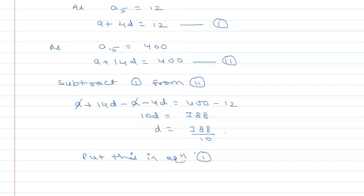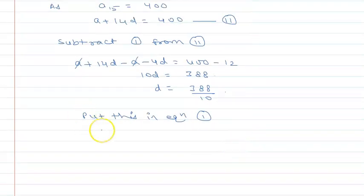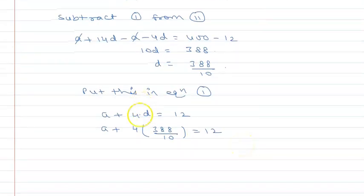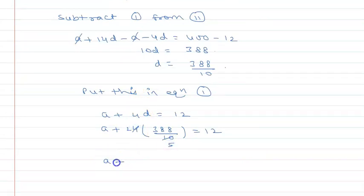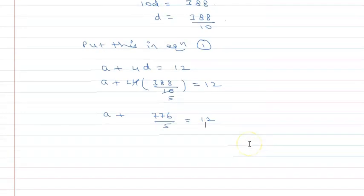Equation 1 is a plus 4d equal to 12. So a plus 4 into d, that is 388 by 10, equal to 12. So this is 2 cancel, 2 goes and this becomes 5. So a plus, 2 multiplied gives 776 divided by 5 equal to 12.